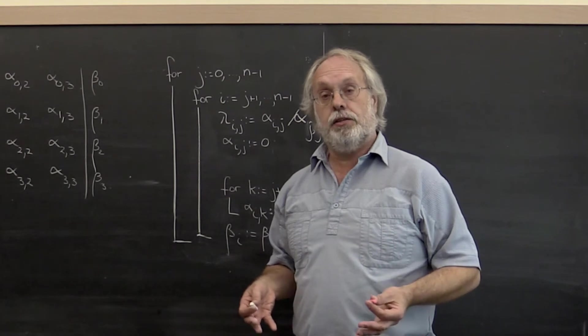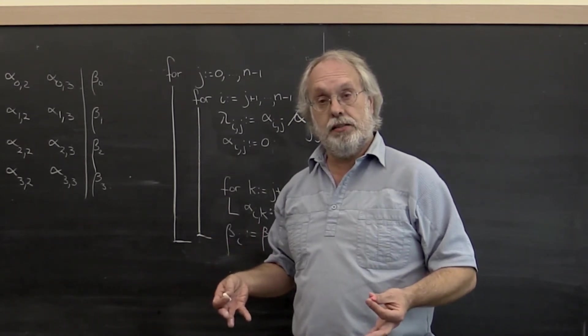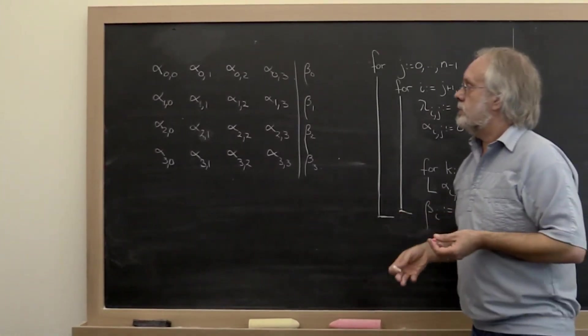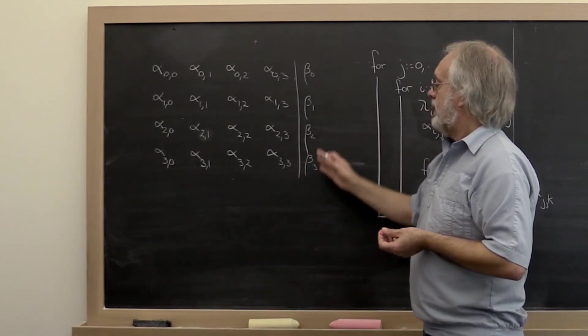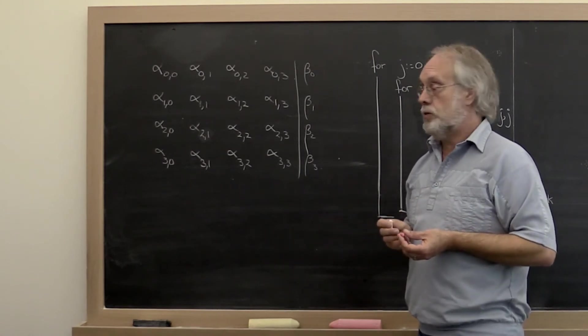Let's look at Gaussian elimination and take that process which we've performed by hand and turn it into an algorithm. What we have here is a 4x4 matrix with the right-hand side so that we have the augmented system that we discussed in the opener for this week.